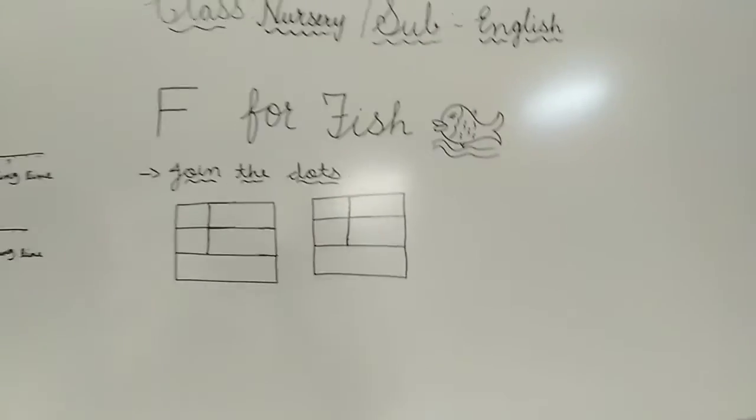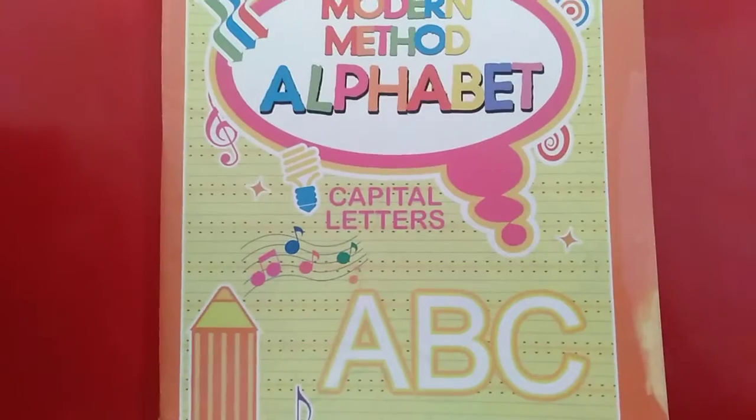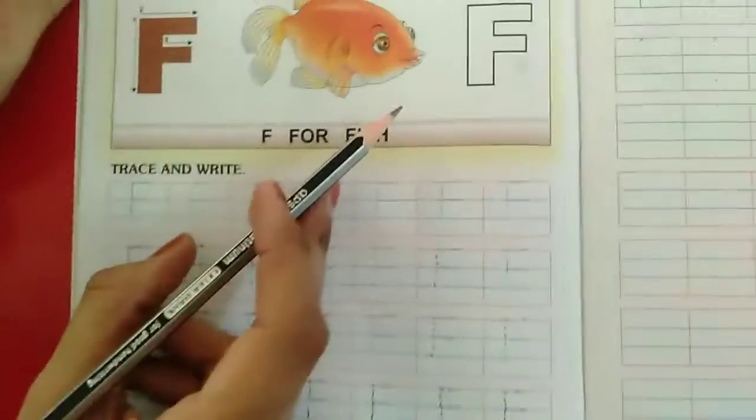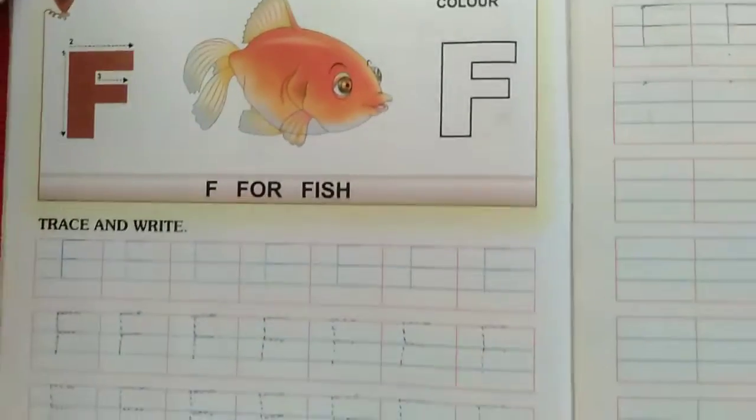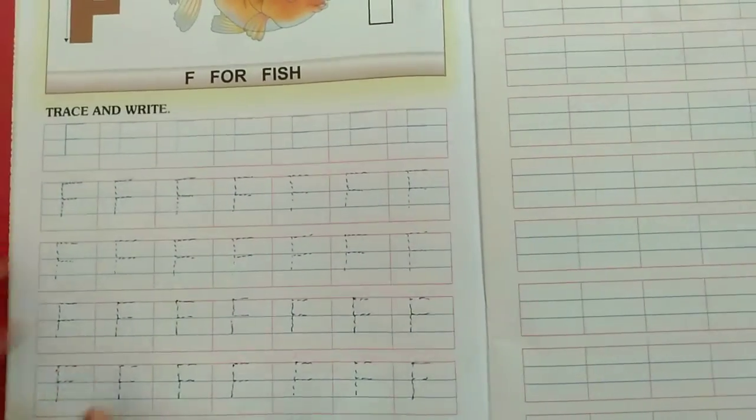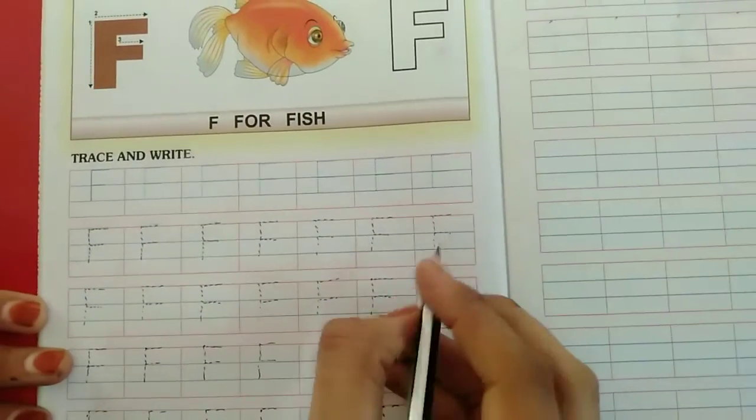Now we will write in our English notebook. First we write in capital letters book. Page number 12 F for fish. Page number 13 abhi nahi karna hai. Only page number 12 hai aapko complete karna hai. Parents is tarah se aapko full page pe dots karke dena hai. And students aapko tracing karna hai.